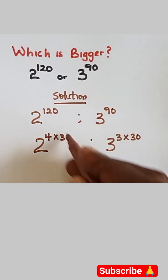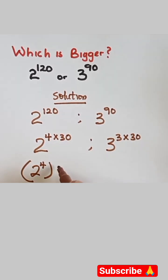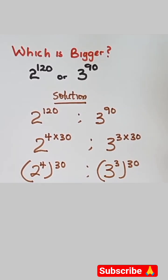We're having 30 and 30 as one of the powers, and you can also write this as 2 raised power 4 then multiply by the 30, and this can be written as 3 raised power 3 multiplied by the 30.